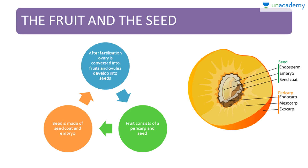Now we move on to the fruit and the seed. After fertilization, the ovary is converted into fruits and ovules develop into the seed. This fruit consists of a pericarp and a seed. The pericarp consists of endocarp, mesocarp, and exocarp. The seed is made up of a seed coat and an embryo, and it has endosperm in it. You can learn in detail from this figure.